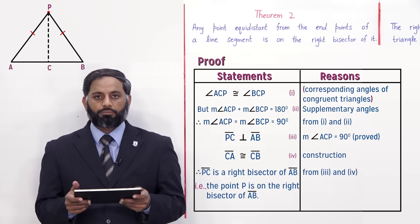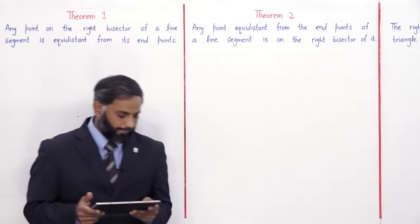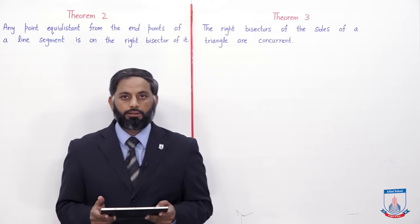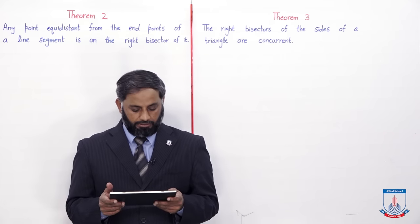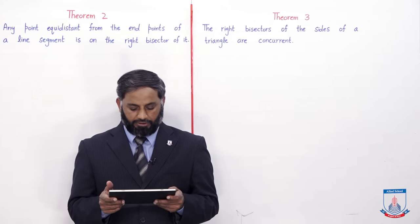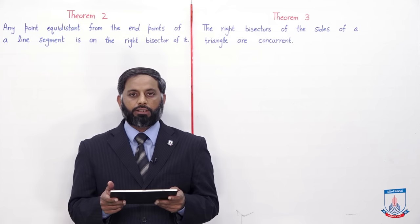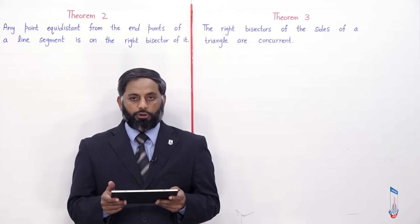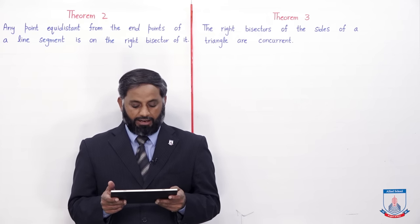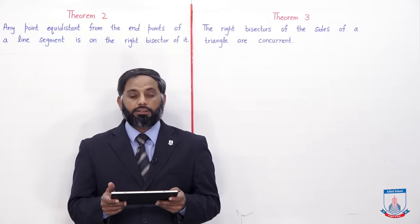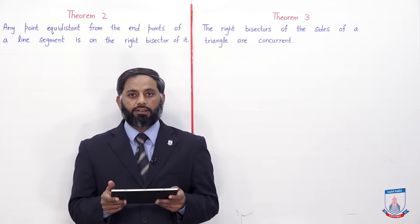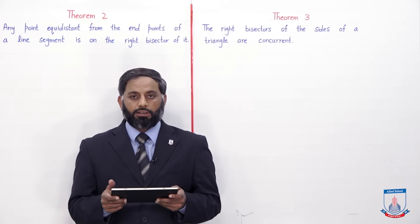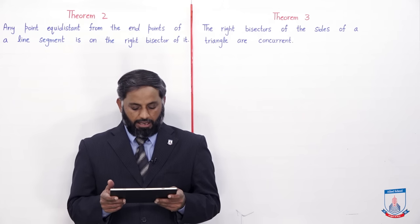Now we will prove Theorem 3. Theorem 3 statement: The right bisectors of the sides of a triangle are concurrent. Concurrent means the three right bisectors of a triangle all meet at one point — this is what we have to prove.